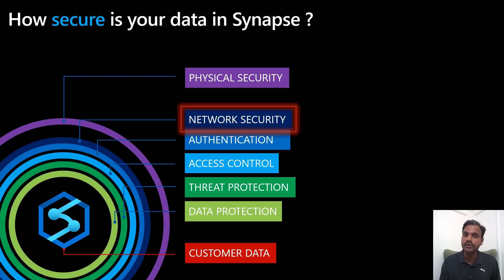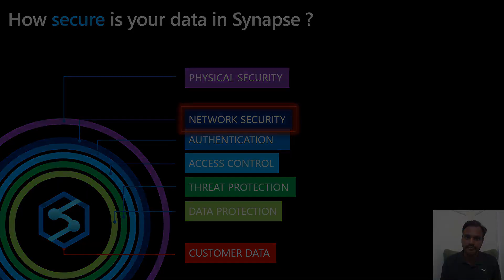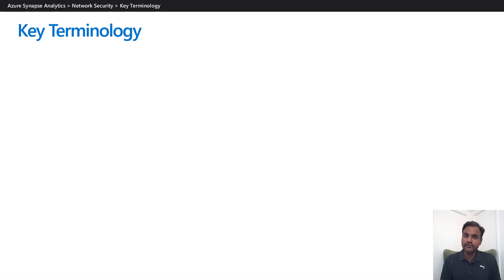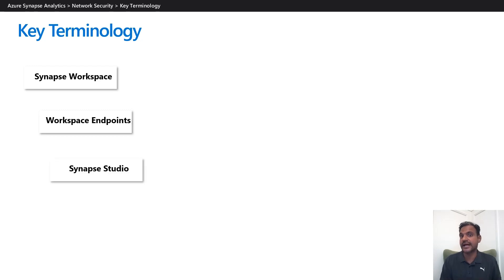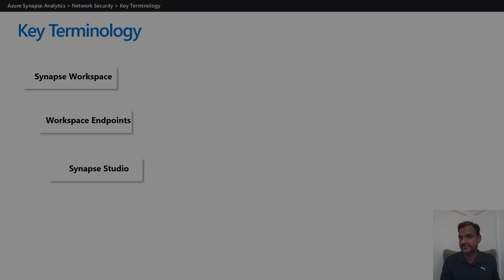First, we will cover the network security. Before we dive into the network security, let us talk about some of the key terminology used in Synapse, which are Synapse workspace, workspace endpoints, and Synapse Studio. It is important to understand these terms, as this will provide a foundation for the rest of the series.